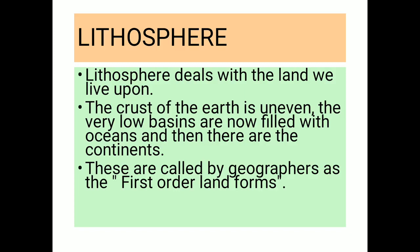These are called by geographers as the first order landforms. In the previous lesson we discussed the continental drift theory proposed by Alfred Wegener, where we discussed how the continents and oceans were formed. Before, there was only a supercontinent and a single ocean, but afterwards they were divided and formed into different continents. Since oceans and continents were the first formations on the earth's surface, they are called first order landforms.